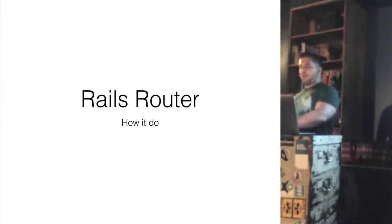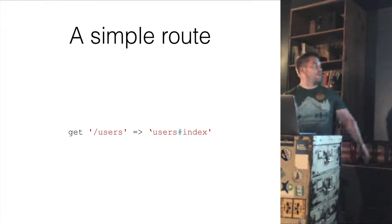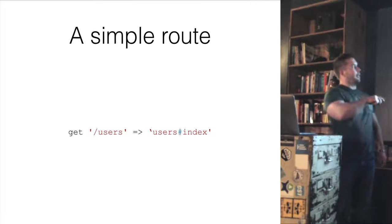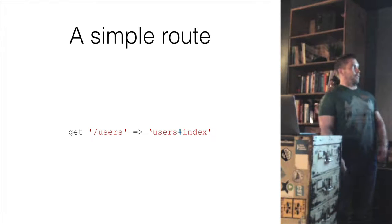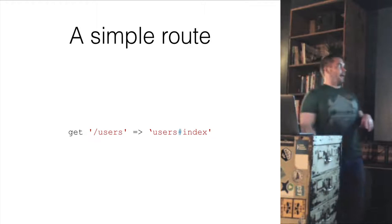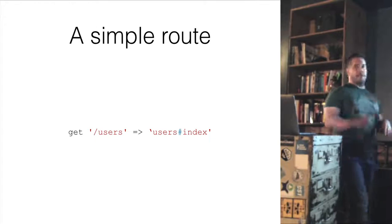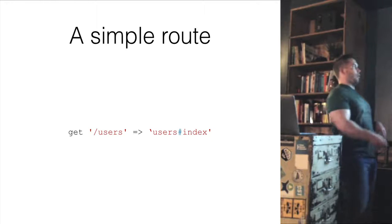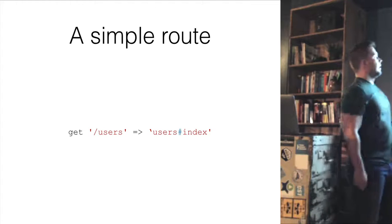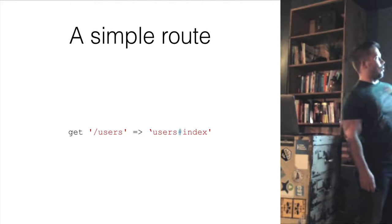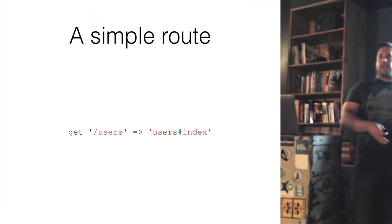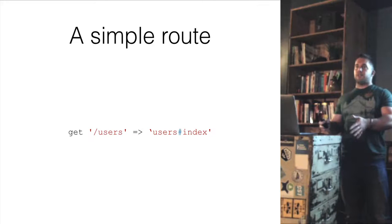Let's take a look at pretty much the simplest route you could have. It says get slash users to users index. What this is saying is: hey router, if you get a GET request and the path for that URL is slash users, then call the index method on your users controller. So basically, if the route matches this particular string, then call this action on this controller.